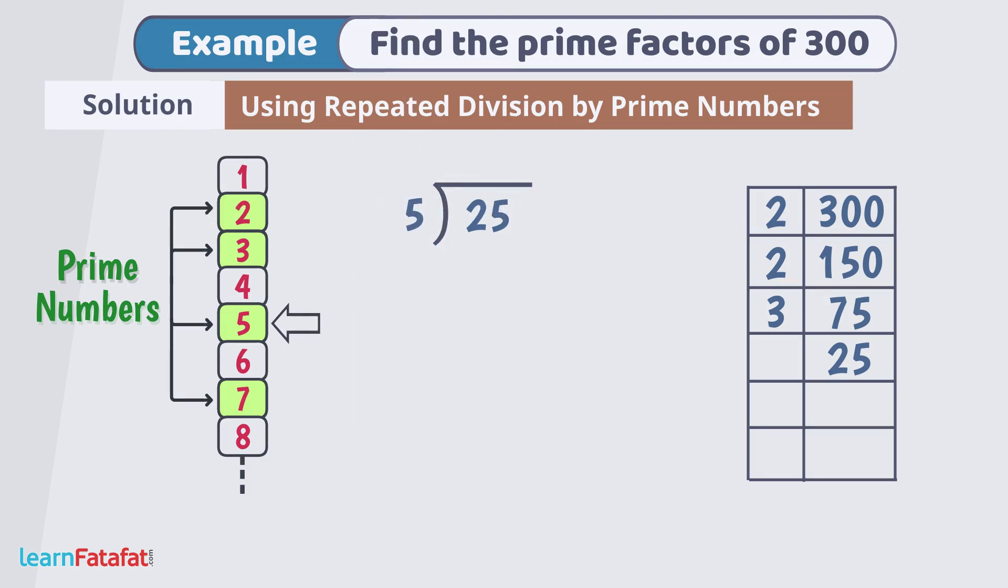25 divided by 5 equals to 5. So, write divisor 5 here and quotient 5 here. Again, 5 is divided by 5 leaves no remainder and quotient is 1. Write 5 here and 1 here. As we got 1, so we will stop here.